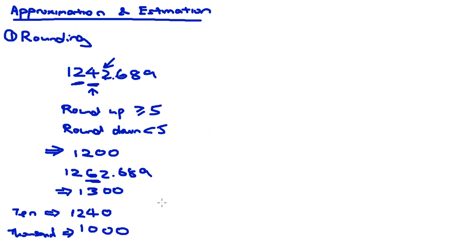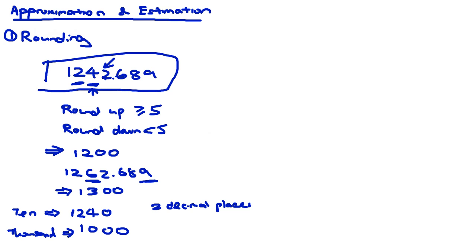It works the same way for decimal places. If the question asks you to round off to two decimal places, you look at the third decimal place. Taking our number 1242.689, to round to two decimal places we look at the third decimal digit, 9, which is greater than 5, so we add 1 to the second decimal place, giving 1242.69.